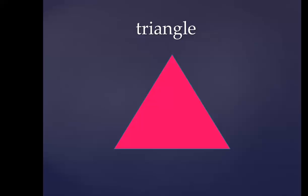Let's go to the other shape. This is a triangle. Say triangle. Very good! Let's sing the song for the triangle. One, two, three: it's a triangle, it's a triangle, how can you tell? It has three sides, it has three sides. One, two, three. One, two, three. Very good!